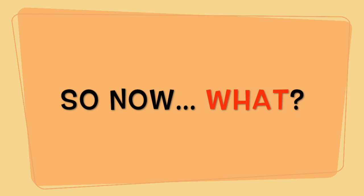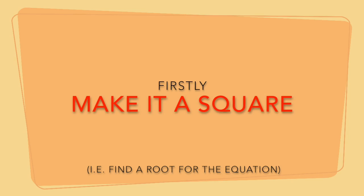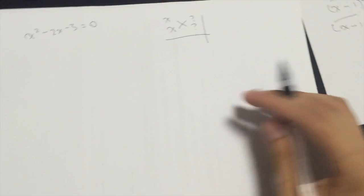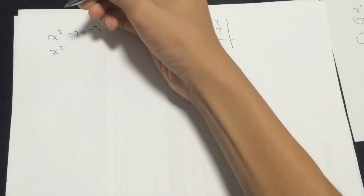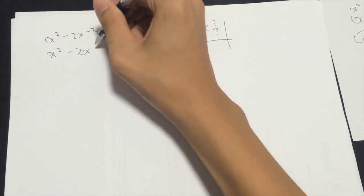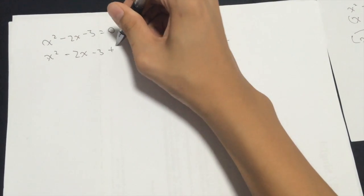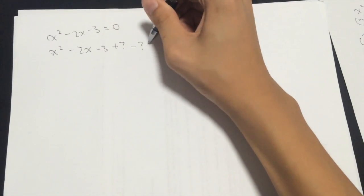Well, first step you have to do is to add an unknown number and minus it off later at the end.